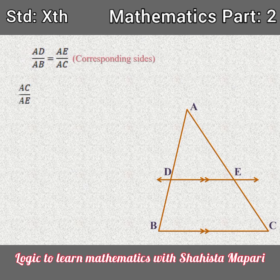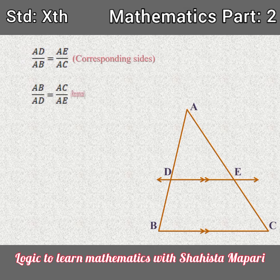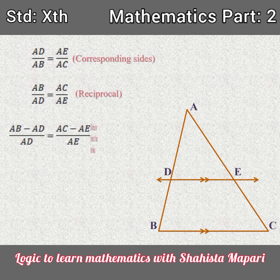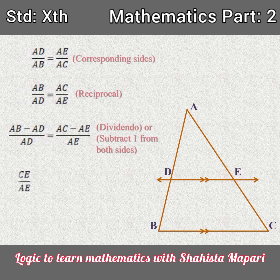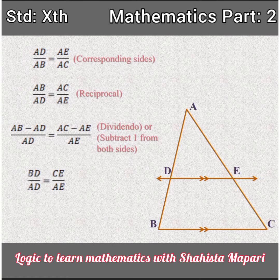Now, do the reciprocal here. That is AB upon AD is equal to AC upon AE. Now, we simply have to remove the common A from both sides. We will get BD upon AD is equal to CE upon AE.